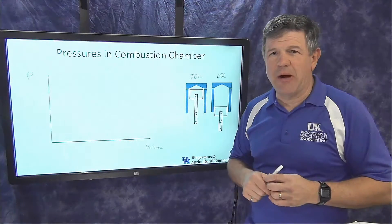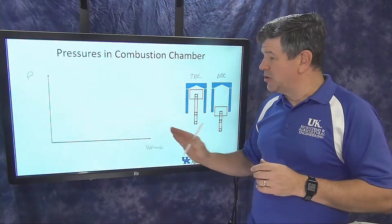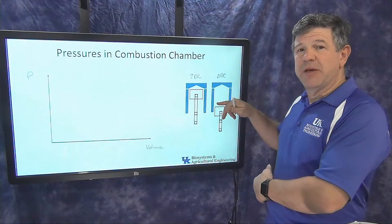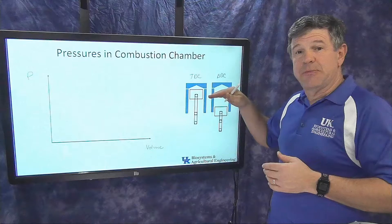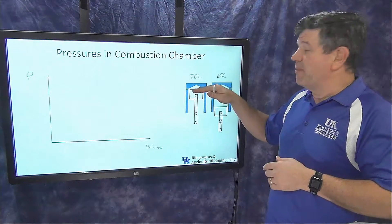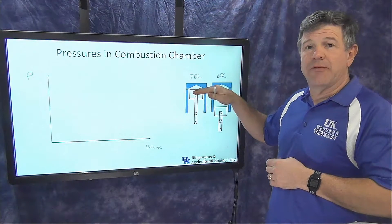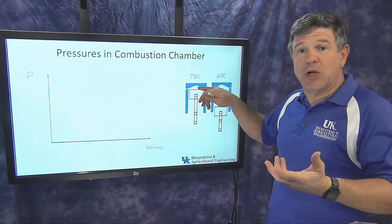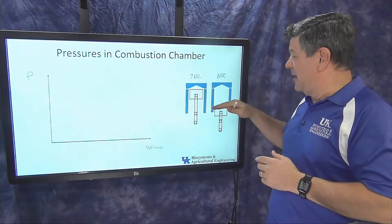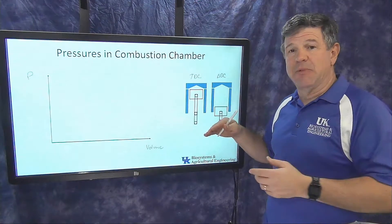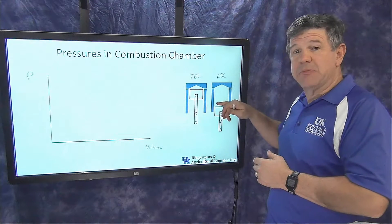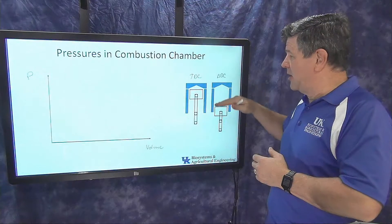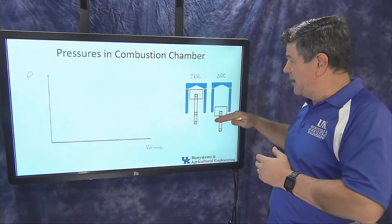We can already start to put some limits on this graph. The volume above the piston changes as the piston moves — as the piston goes up to the top, the volume goes down to a minimum (the clearance volume). When it's down at the bottom, that's the maximum volume: clearance volume plus displacement. The piston goes back and forth between minimum and maximum volume.